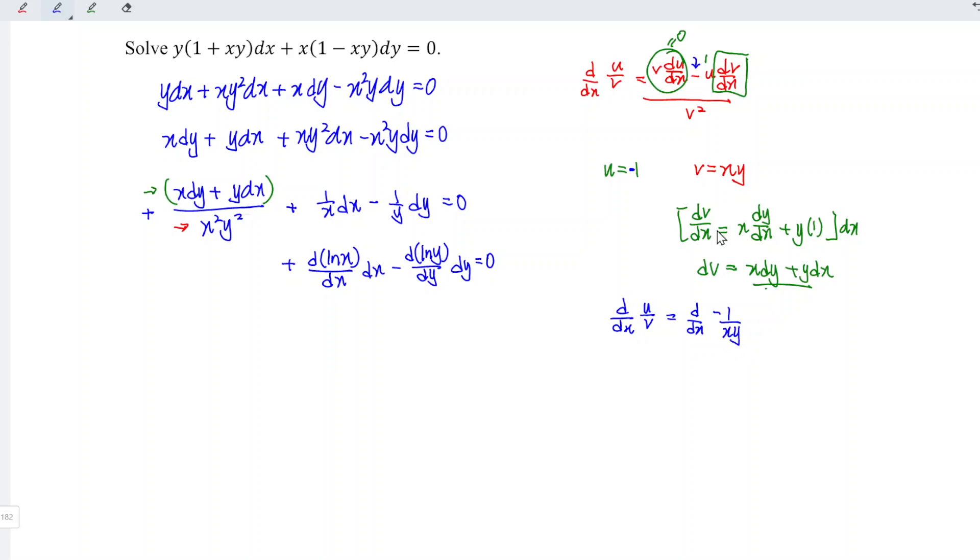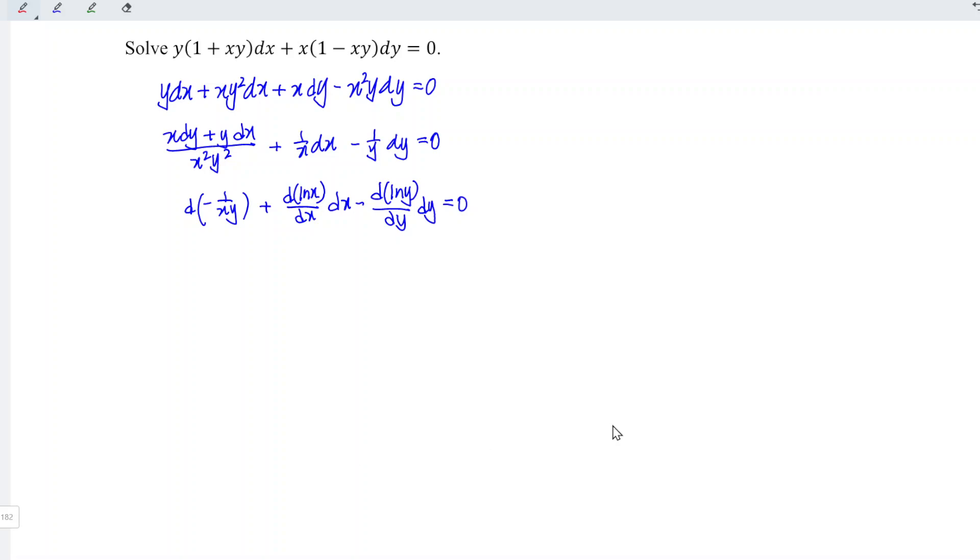Don't forget we already times the entire equation by using dx, so we should remove this when we write it here. So this is equal to d times negative 1 divided by xy. Let's simplify: we have d negative 1 over xy plus d ln x, cancel with dx we left d ln x, and minus d ln y, cancel with dy we left d ln y, and this is equal to zero.